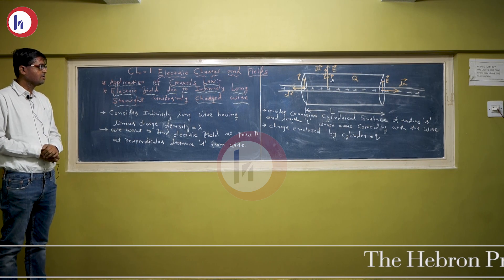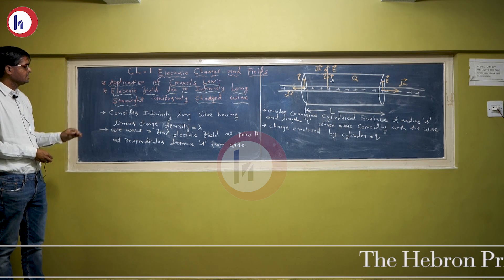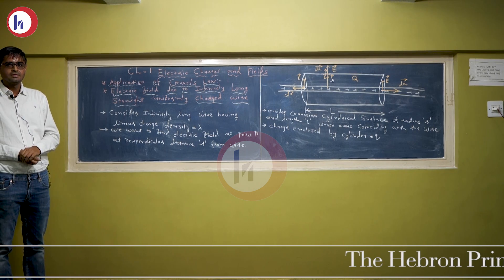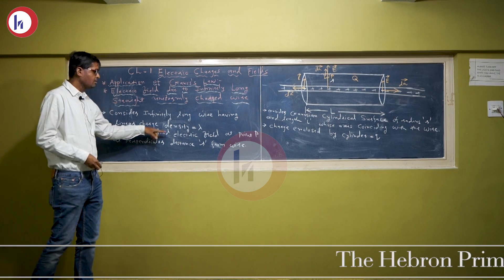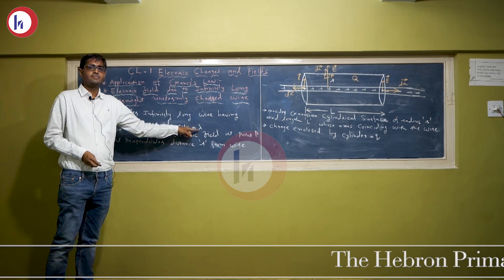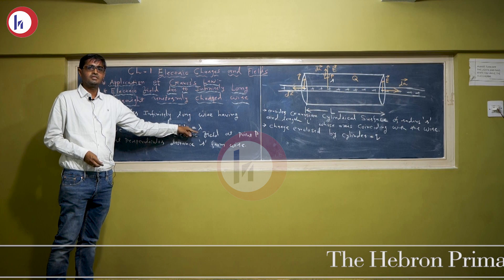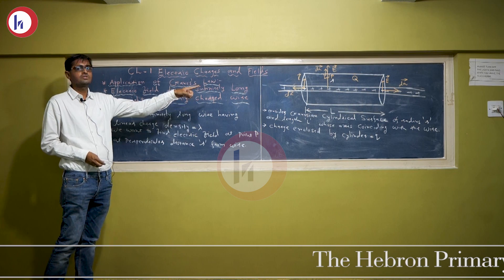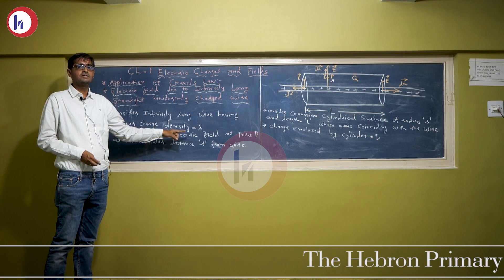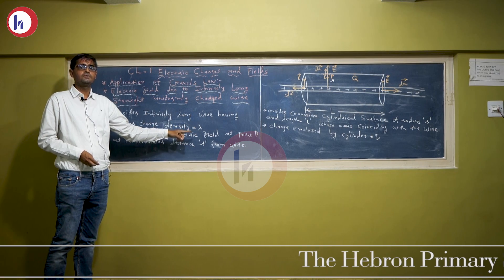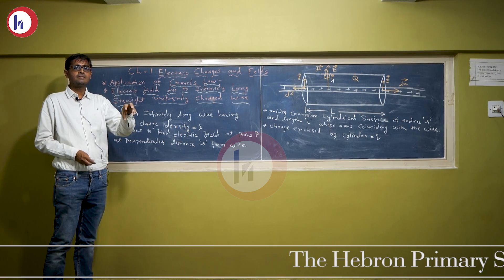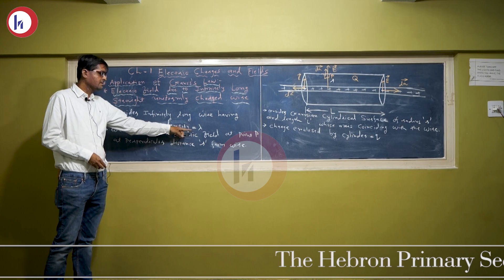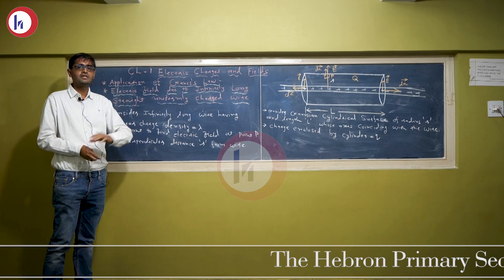Here we consider an infinitely long wire having a linear charge density lambda. The linear charge density of the wire is lambda, and lambda is constant throughout the wire. Lambda is nothing but the charge per unit length — every unit length carries the same charge lambda.